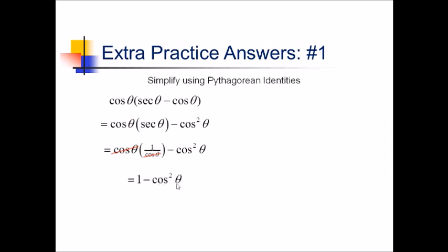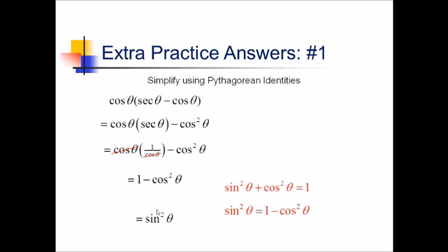And 1 minus cosine squared — I can rearrange my sine squared plus cosine squared equals 1 identity to get that pattern. If I subtract cosine squared from both sides, we see that that is equivalent to sine squared. So this expression over here is just going to be sine squared.